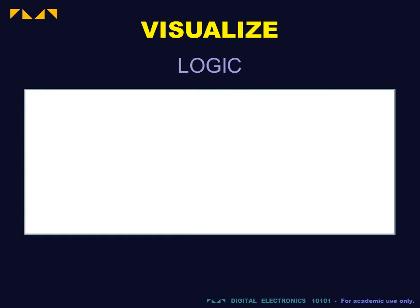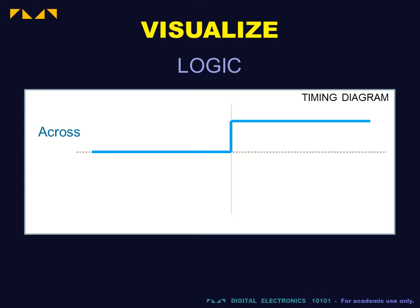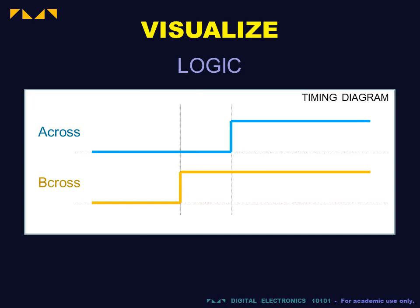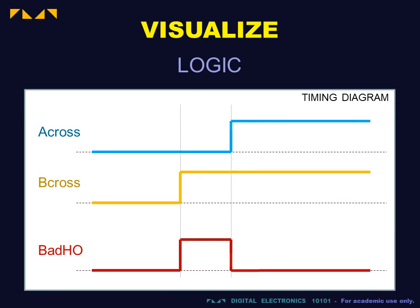The necessary logic is best viewed in a diagram called a timing diagram that shows the time sequence of a bad handoff. At the moment when A steps over the red line, the input A cross changes or transits from 0 to 1. Likewise, B cross transits from 0 to 1 when B steps over the red line. We wish to flag a bad handoff if the transition of B cross occurs before that of A cross.